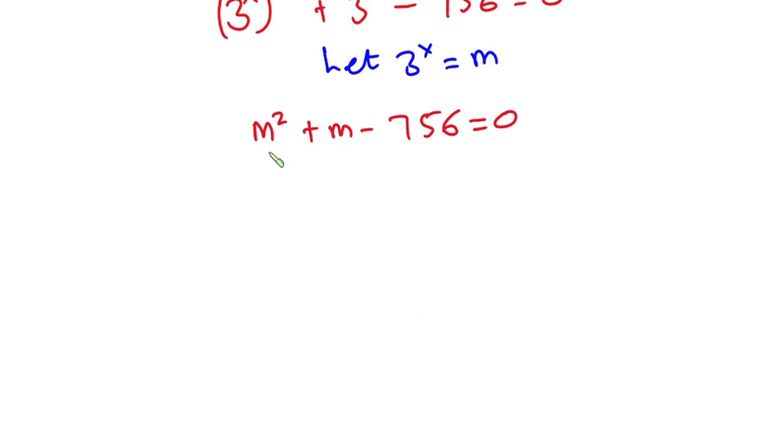And now you can see we have a quadratic equation, so let's use factoring method to solve this. I'm going to find two values that if I multiply them I'll be getting negative 756, but if I sum them up I'll be getting positive 1.